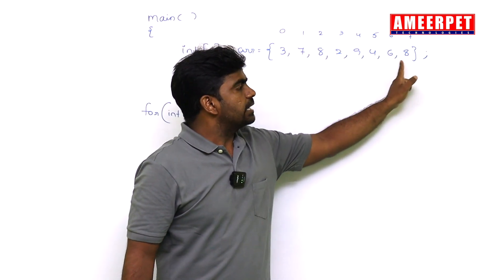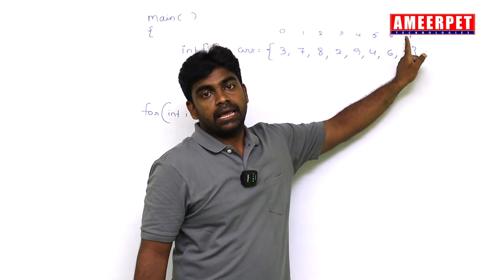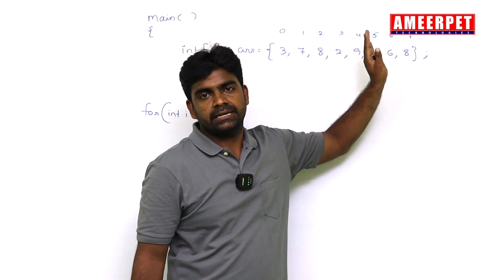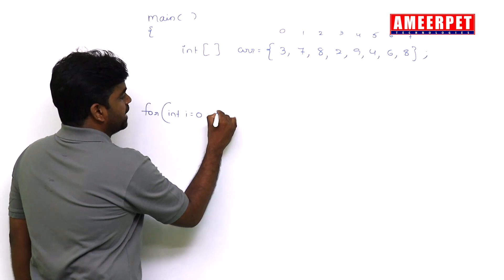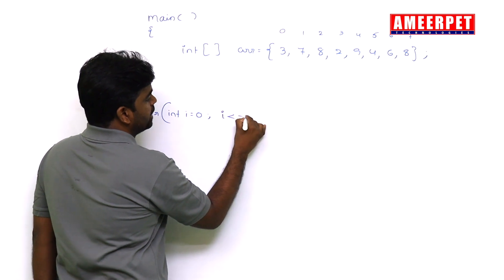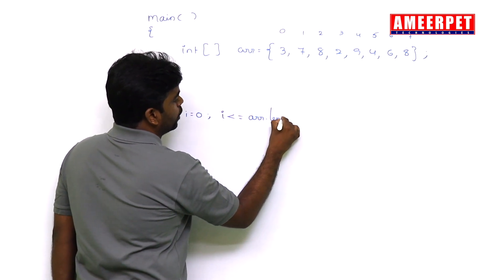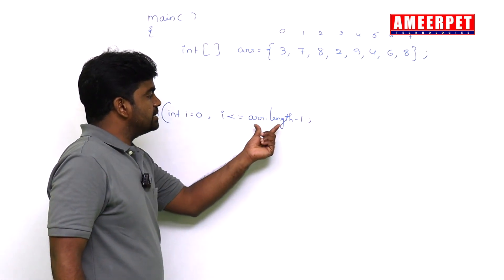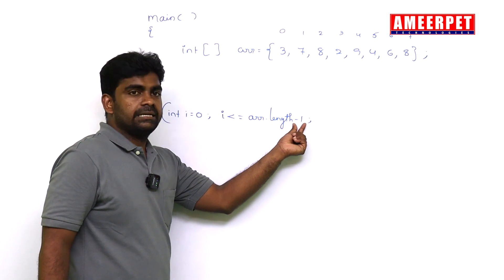The total number of elements are eight, so eight minus one is seven, length minus one. So i value is less than or equal to arr.length minus one. Length is eight, eight minus one is seven.